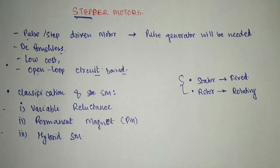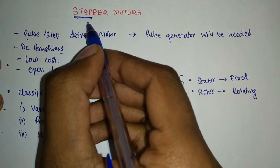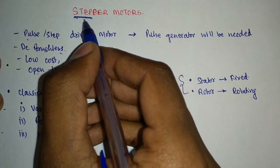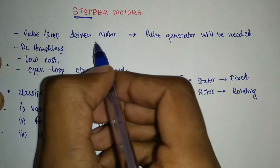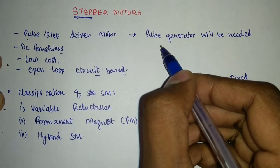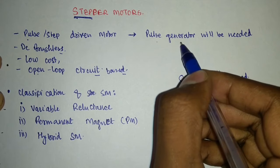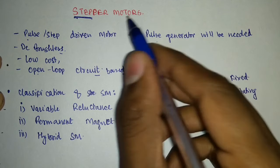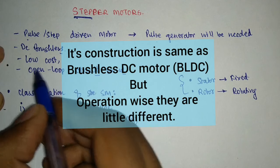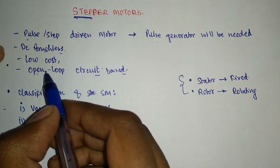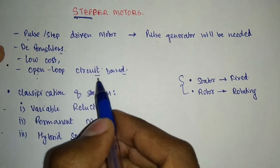Stepper motors, as the name suggests, have certain steps for their working or functioning. Those steps can be provided in terms of pulses, so we have a pulse-driven motor here, and those pulses will be generated with the help of a pulse generator needed to drive a stepper motor. This is also known as a DC brushless motor, and usually they are very low cost compared to servo motors, and they are open-loop circuit based.